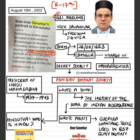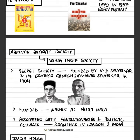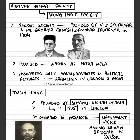Generally it is said that Savarkar was against Muslims, but if we look at history, in some of the movements to fight off the British and throw them out from the country, he also took the help of the Muslim community. There was a secret society called Abhinav Bharat Society, which was formed by Veer Savarkar. From 1937 till 1943, four years before independence, he was the president of Hindu Mahasabha.